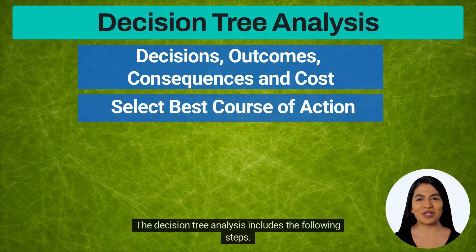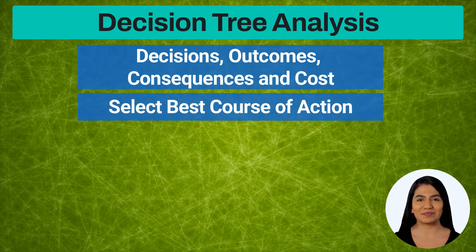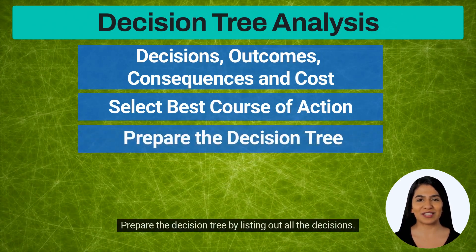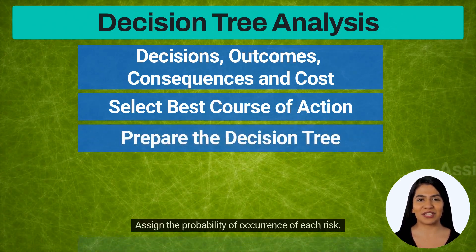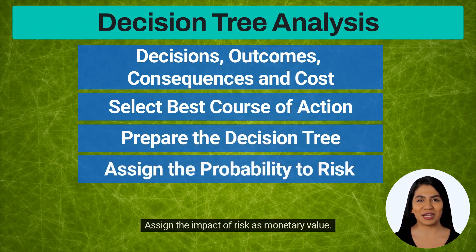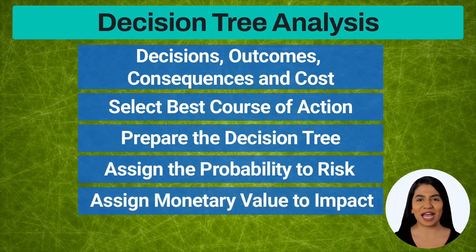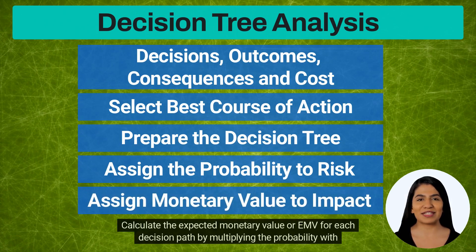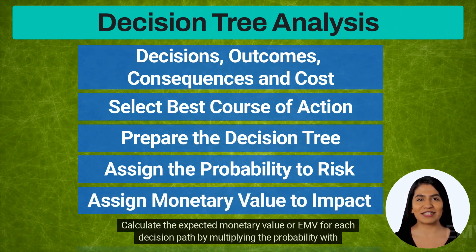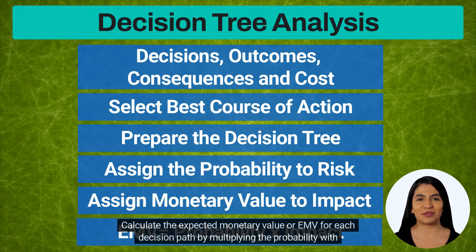The decision tree analysis includes the following steps: prepare the decision tree by listing out all the decisions, assign the probability of occurrence of each risk, assign the impact of risk as a monetary value, and calculate the expected monetary value, or EMV, for each decision path by multiplying the probability with impact.